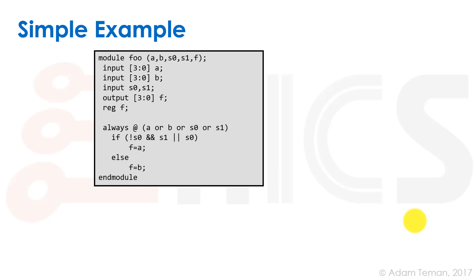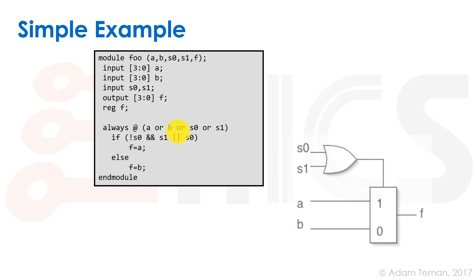As a simple example: we have a module called foo with a bunch of inputs and a combinatorial always block. It has some sort of if statement — which is some sort of a MUX — that in one case outputs A, in another case B, but there's a strange compound condition that we'd have to draw a Karnaugh map to figure out. The synthesizer can deal with such a trivial problem very easily and figure out that all this actually is just an OR gate. Once we start getting many more input variables and a more complex function, it's going to be really hard — almost impossible — to do by hand.